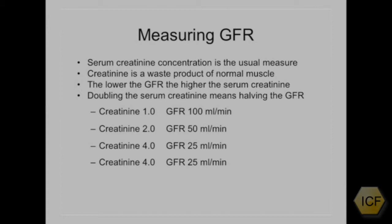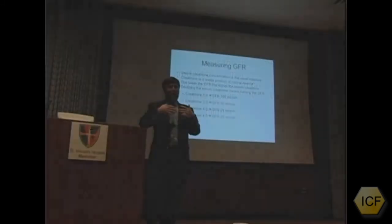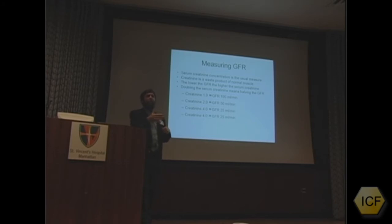At a creatinine of one milligram per deciliter in the usual units that we use, you have a GFR of about 100 milliliters per minute. In other words, 100 milliliters, that's about a tenth of a liter, is being filtered across the glomerular capillary every minute.